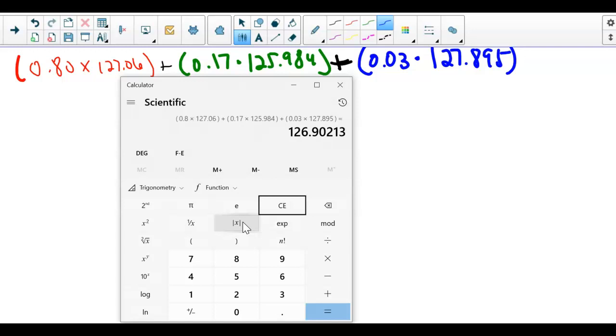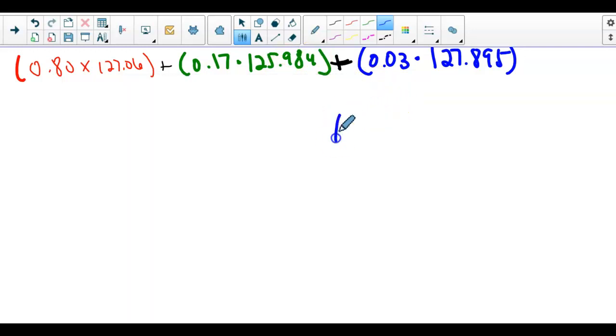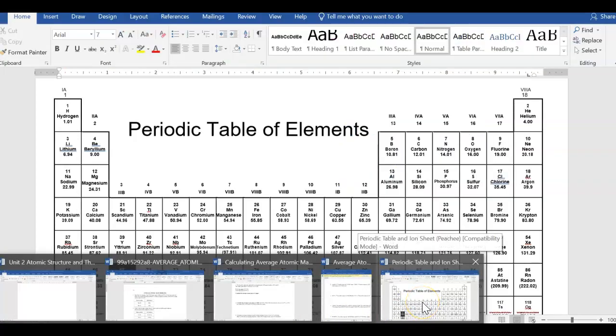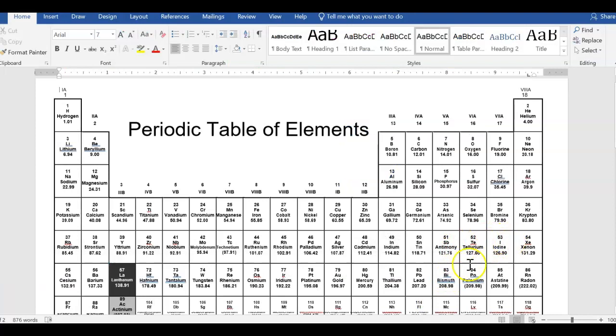I can write that down, and we're going to round it to two places past the decimal. 126.90213, I said we're going to round to the second place past the decimal, first place, second place, this 2 says leave it alone, 126.90. And we're going to compare it to the periodic table and see how close we got. It should be right on, and we are correct.